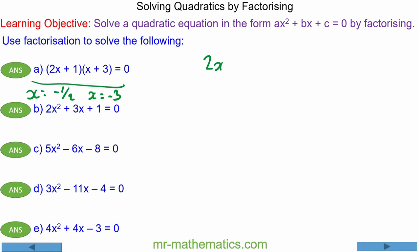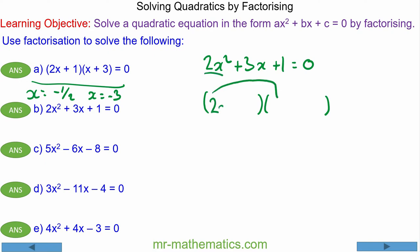For question b, we have 2x squared plus 3x plus 1 equals 0, so we're going to factorise it into two brackets. This term multiplied by this term is going to make 2x squared, so it's 2x and x. And this term multiplied by this term is going to make 1 — the only way of getting 1 is 1 times 1. So the factorised form is 2x plus 1 and x plus 1 equals 0.